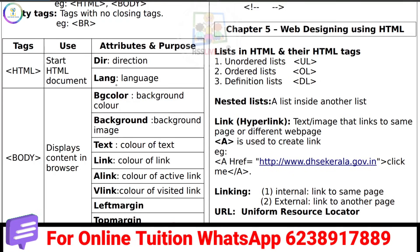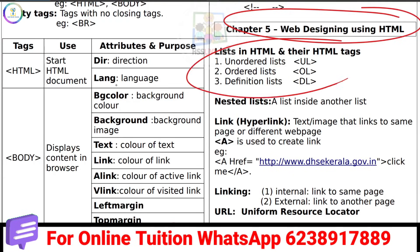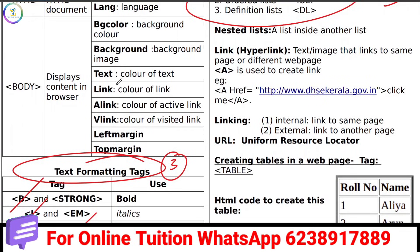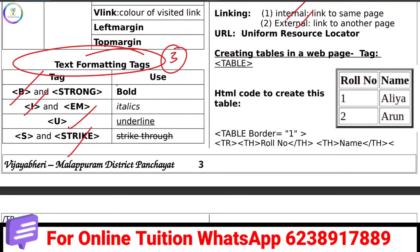Chapter 5 covers web designing using HTML. We will learn about Lists: Ordered List, Unordered List, and Definition List. Text formatting tags are also covered here.